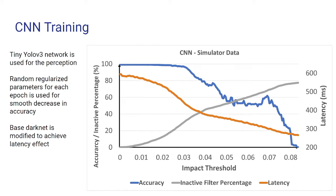Typically, when you start deselecting certain CNN filters, automatically the accuracy drops very significantly. To avoid that problem, we trained our CNN with a random regularized parameter for every epoch. With that, we can achieve a smooth drop as the filters get deselected. You can see that we are deselecting filters based on the impact value of the filters, which is quantified based on the mean absolute sum of the filter. As the impact threshold increases, filters get deselected, and the accuracy drops smoothly rather than in a cliff manner.